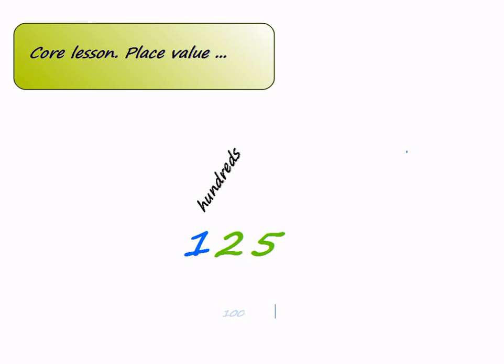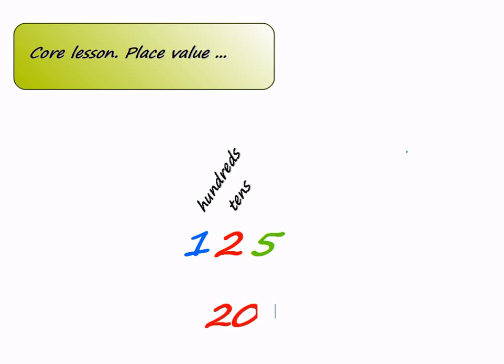Now, if we move one place to the right of the hundreds place, the digit represents the tens place. The middle place tells you how many sets of 10s are in the number. Because of that, 2 in the example isn't just worth 2, but in fact it's worth 20, as it represents 2 groups of 10. So the place value of 2 is 20.